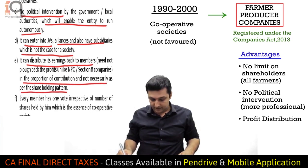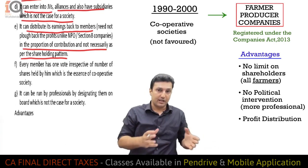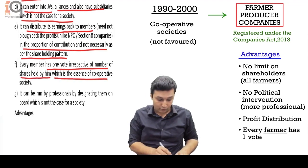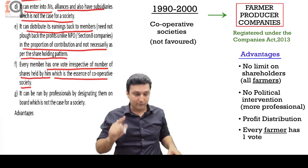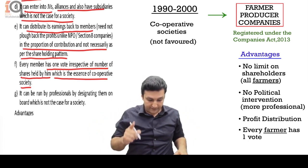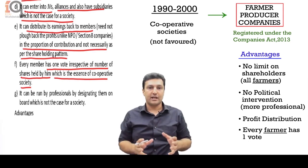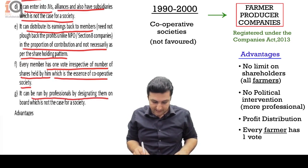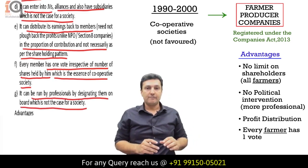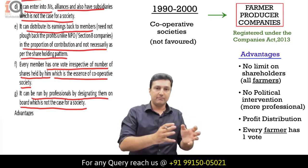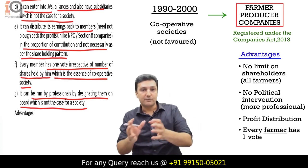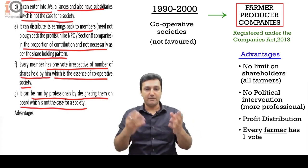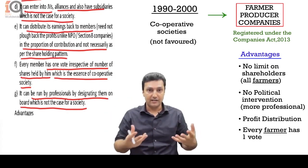They can actually work like a company, but it's a producer company. Every member has one vote irrespective of the number of shares held by him, which is the essence of a cooperative society. It can be run by professionals by designating them on the board, which is not the case for a cooperative society. In a cooperative society it is run by the members, but a farmer producer company can now appoint professionals — MBAs with degrees — so that the businesses can be run more professionally.